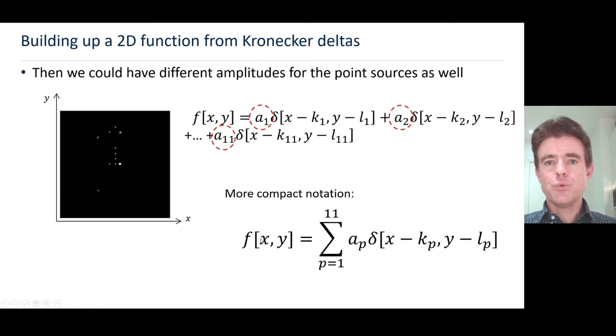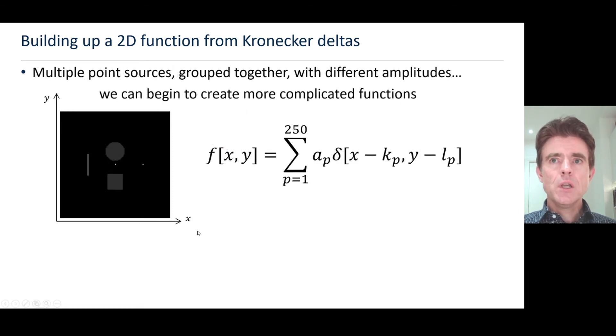Now we can build complexity still further. Imagine now we've got a circle, a square, a couple of point sources and a line. Key point here is the circle, the square, the line—those can be regarded as groups of point sources.